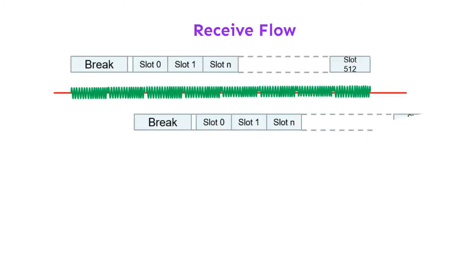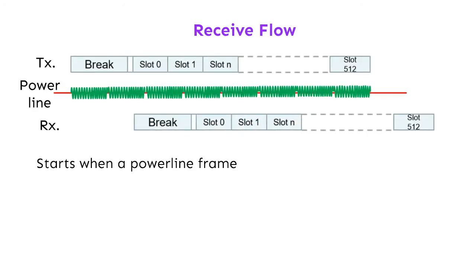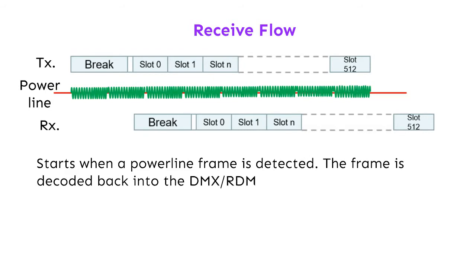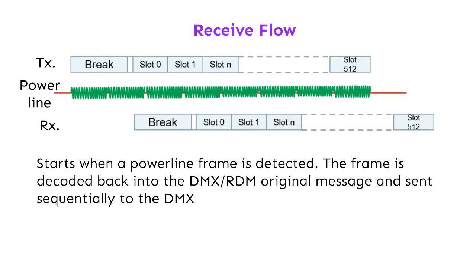Receive flow starts when a power line frame is detected. The frame is decoded back into the original DMX-RDM message and sent sequentially to the DMX controller via the HDO pin.